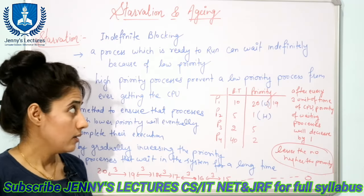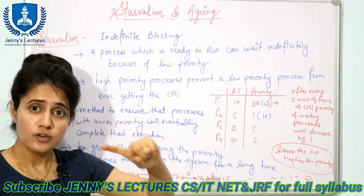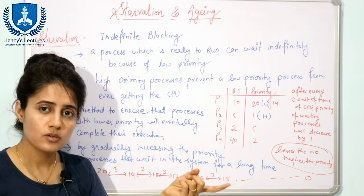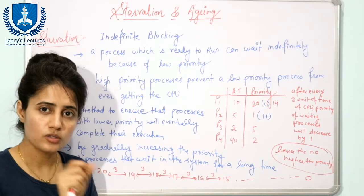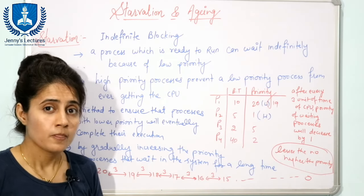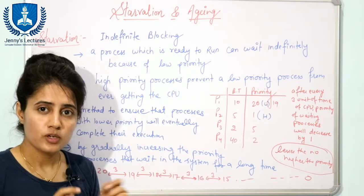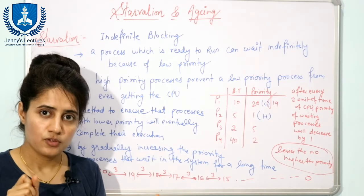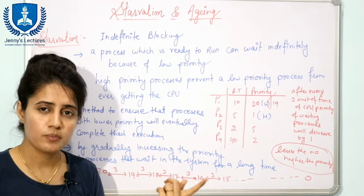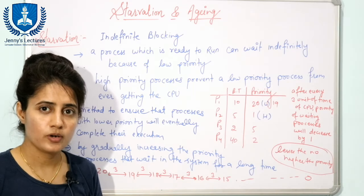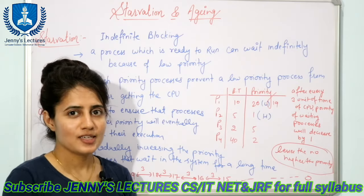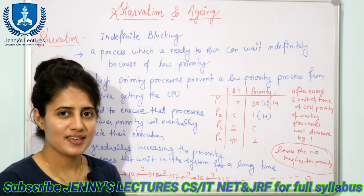Starvation is different from the convoy effect — the convoy effect comes in First Come First Serve, while the starvation problem comes in Shortest Job First scheduling and priority scheduling. I have discussed the difference between convoy effect and starvation in one of my previous videos; I'll provide the link in the description box. I'll see you in the next video — till then, bye bye, take care.